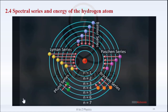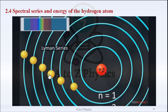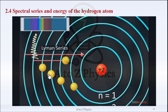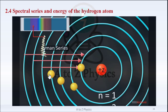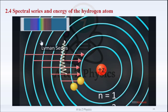The spectral lines arising from the transition of electrons of an atom from a higher energy state to a lower energy state form a spectral series. The various spectral series of the hydrogen atom can be expressed using the orbital diagram. When a transition from a higher excited state to the ground state, N = 1, occurs in the atom, the Lyman series is obtained. The wavelengths of this series lie in the ultraviolet region of the electromagnetic spectrum.